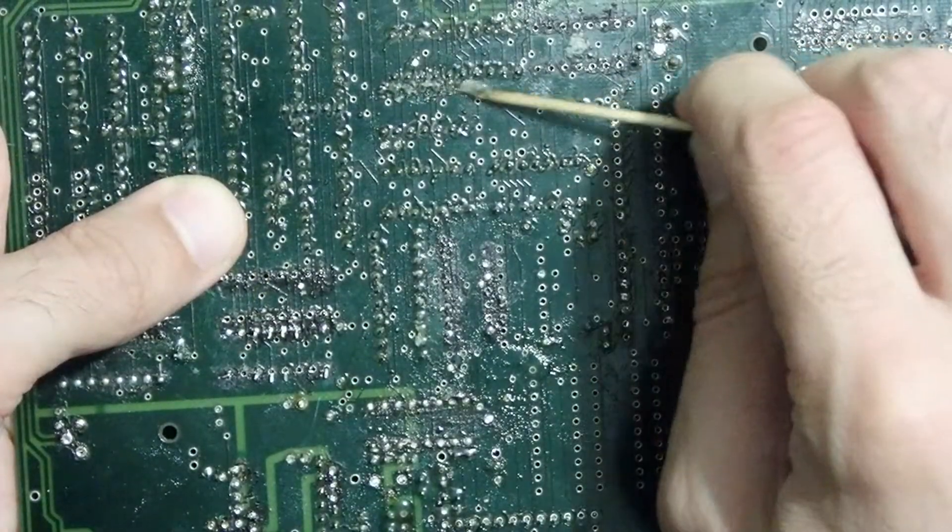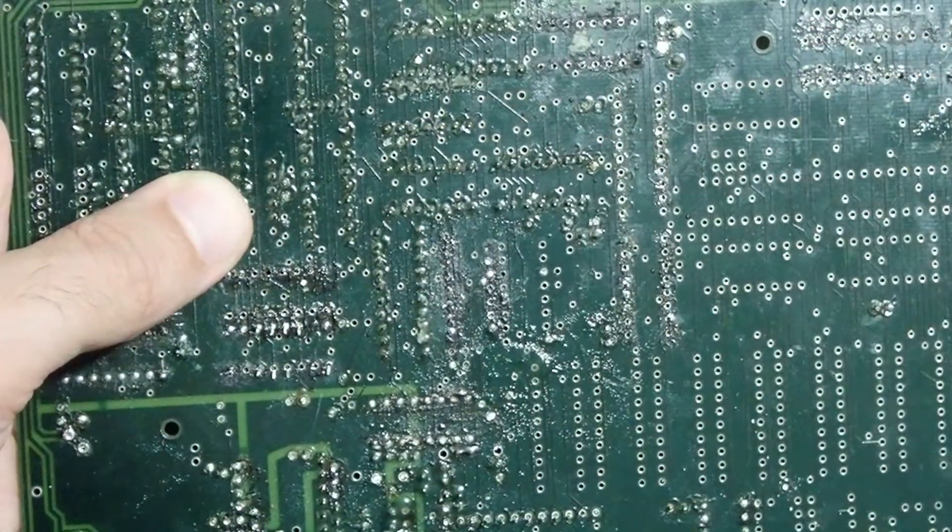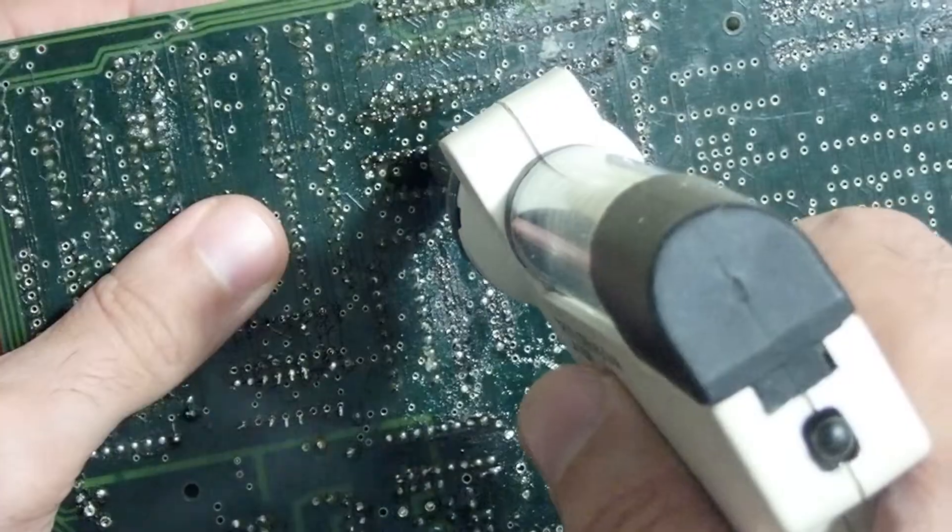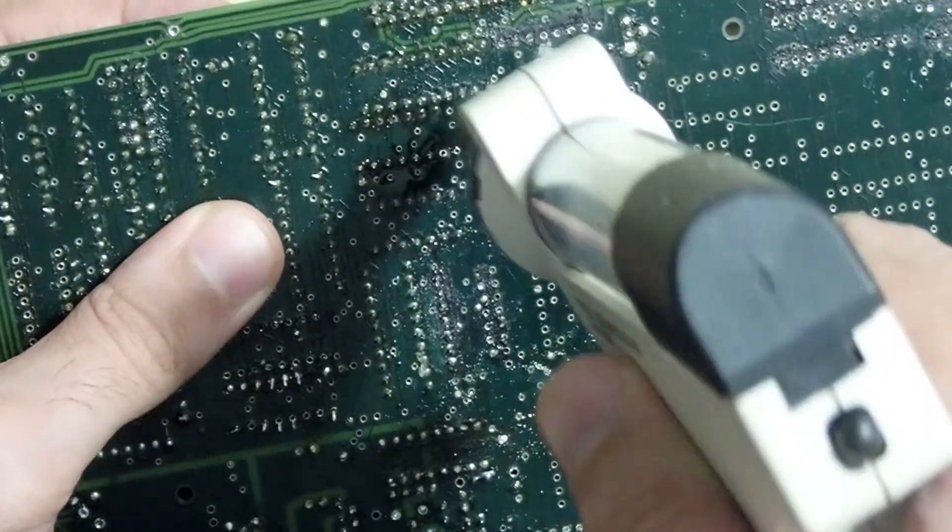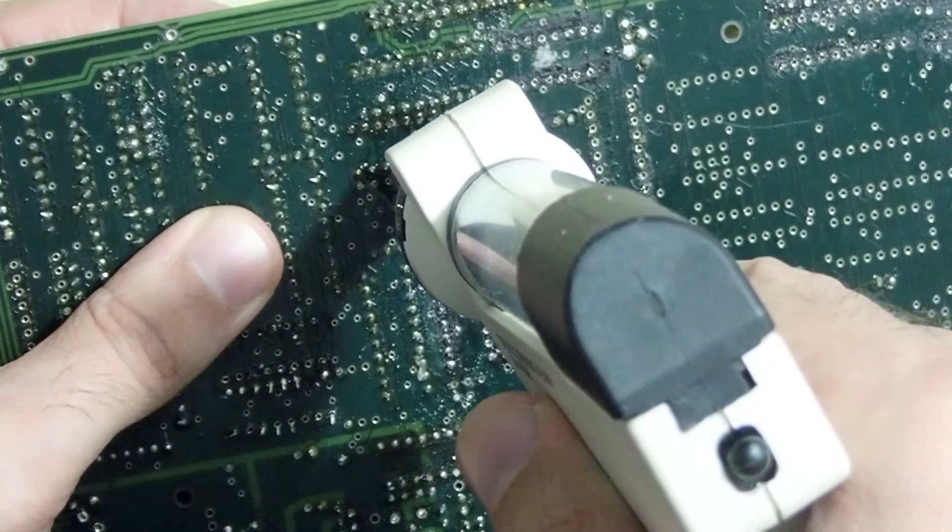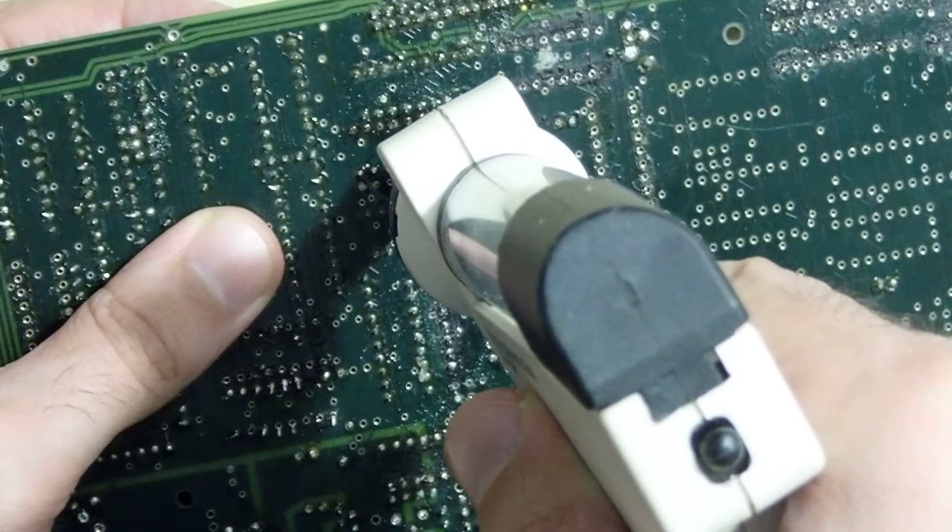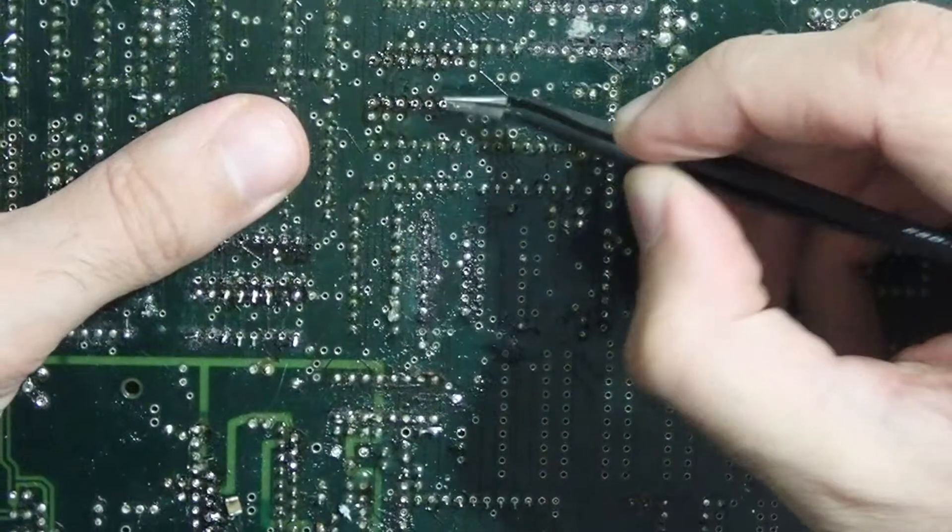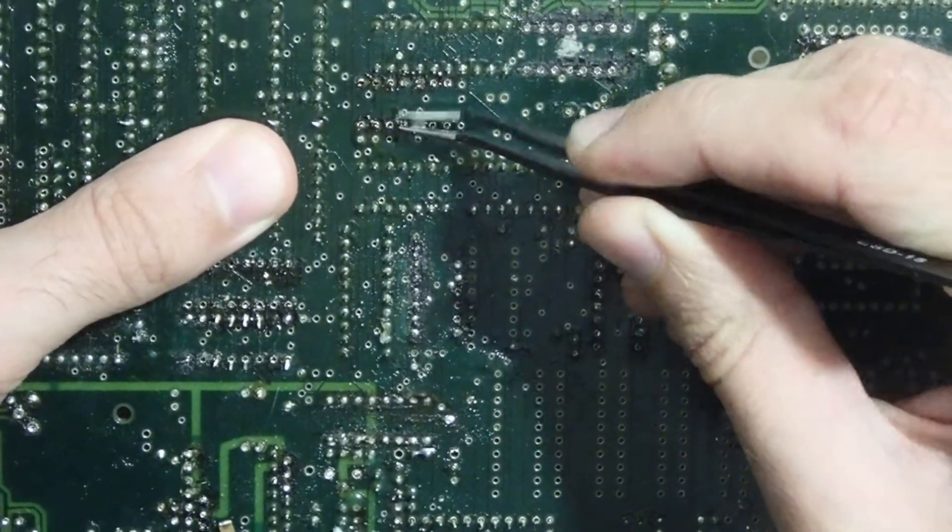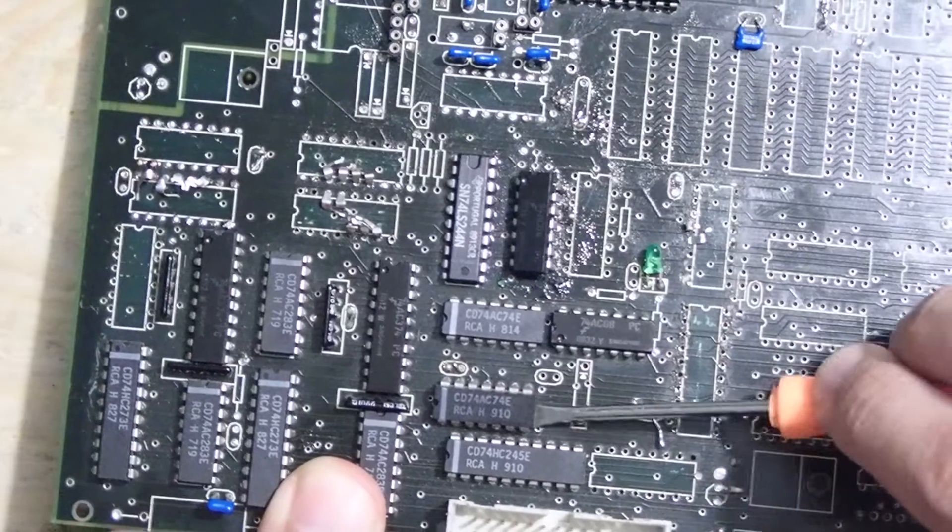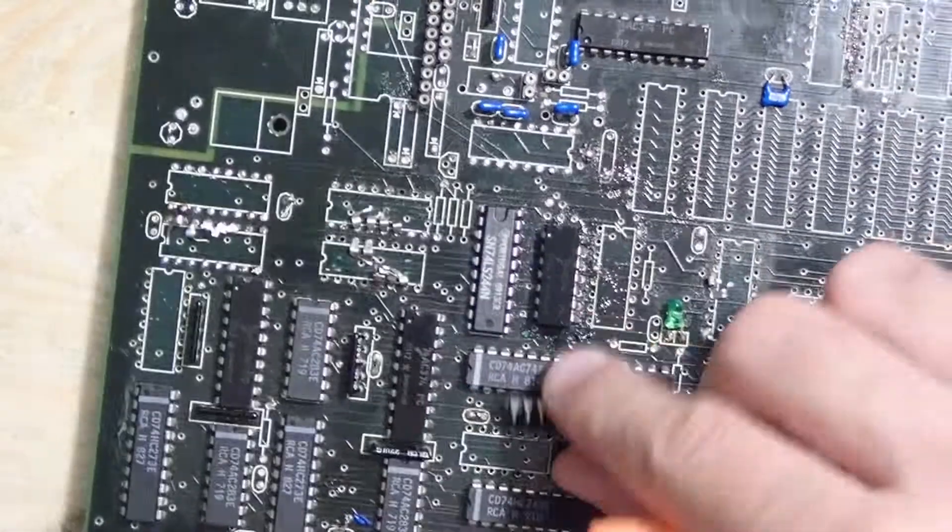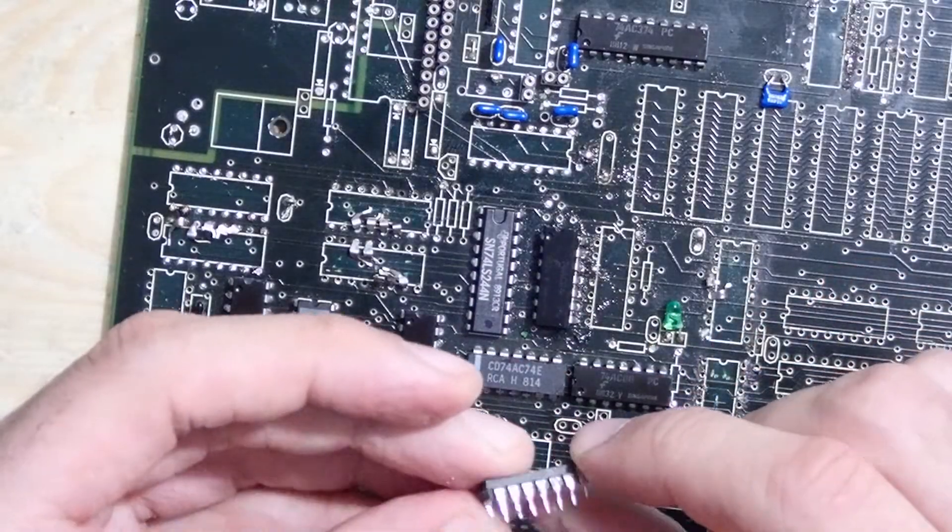This IC with 14 legs. And as always, add some flux, add some fresh solder, and then try to solder the contacts and wiggling. A little bit of feeling if the legs are free, and voila, it comes out of the board. Very simple and very fast.